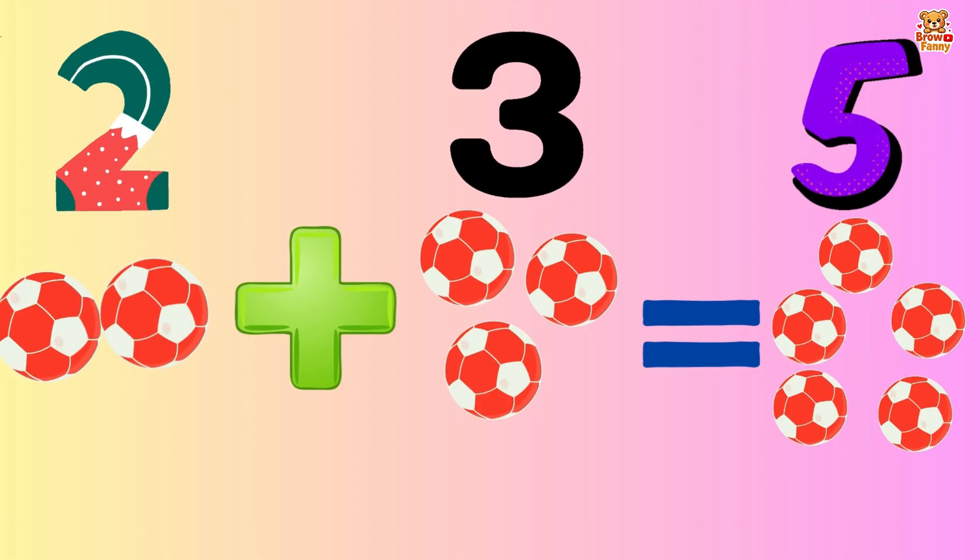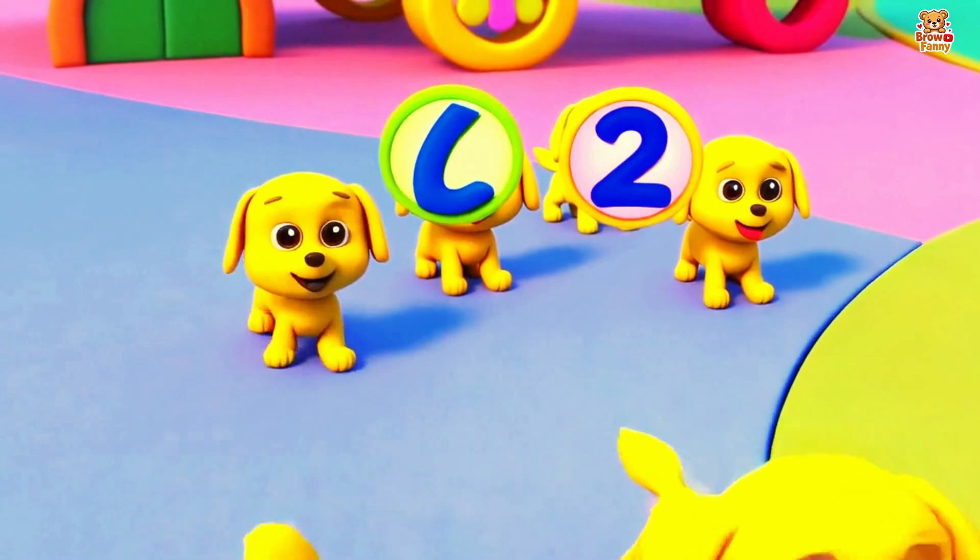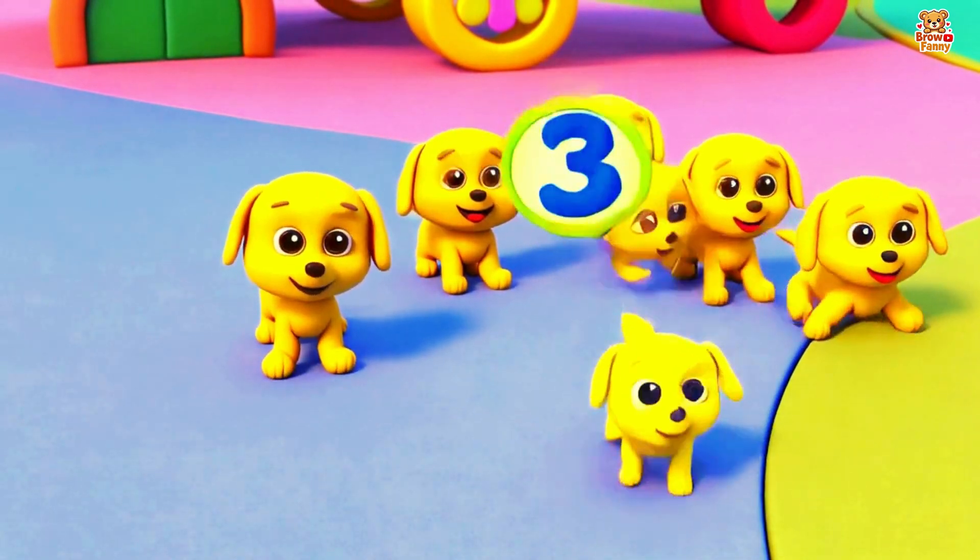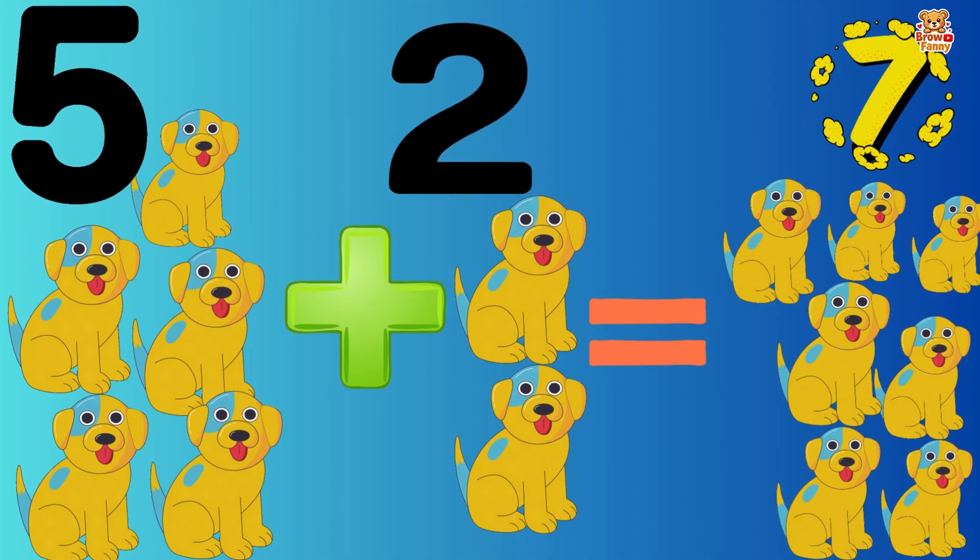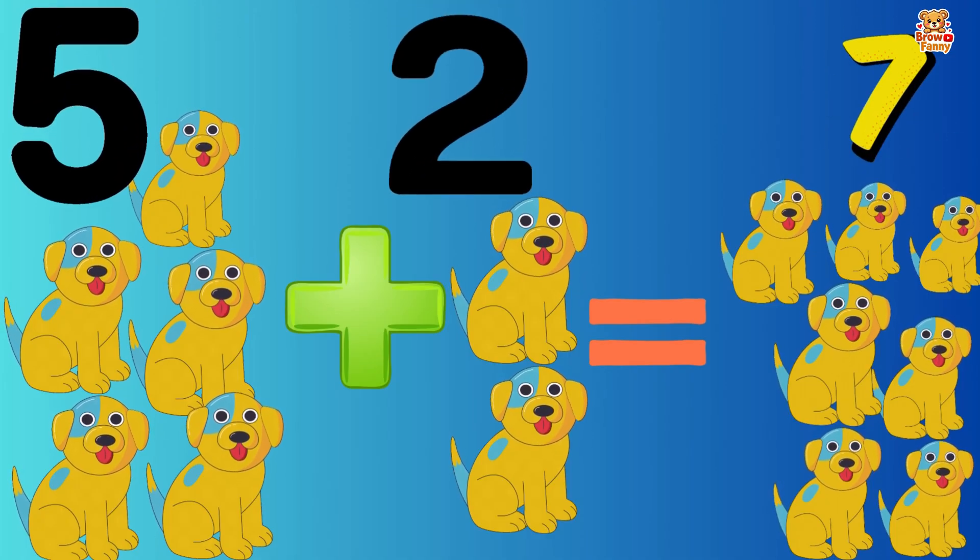Just add them up and count with me. Five yellow puppies wagging their tails, add two more friends and we've got a happy trail. Now we've got seven puppies playing all day, counting up in a happy way.